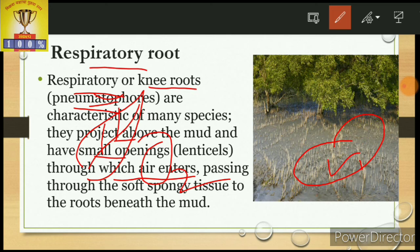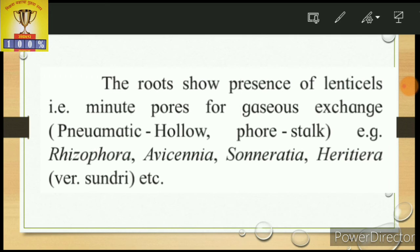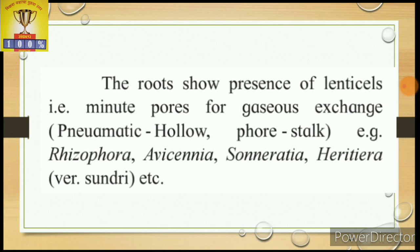Gases enter inside the roots and pass through the spongy tissue during breathing. Examples of plants with respiratory roots include Avicennia, Sonneratia, Heritiera, which has the vernacular name Sundari. These are different examples of this type of root.